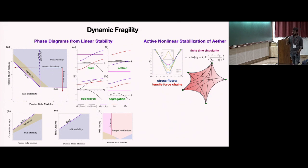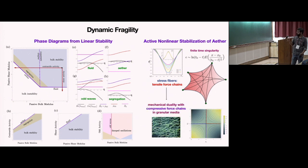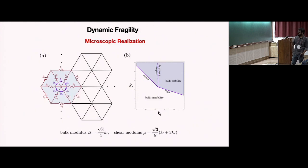In cytoskeleton, you will see tensile force chains. As I was mentioning before, these tensile force chains are mechanically dual to the compressive force chains in granular media through this mechanical duality in the energy landscape. This is a very simple microscopic realization of this material through longitudinal rotational springs. You have this phase diagram at the microscopic level, showing where to operate so that you get these lines.